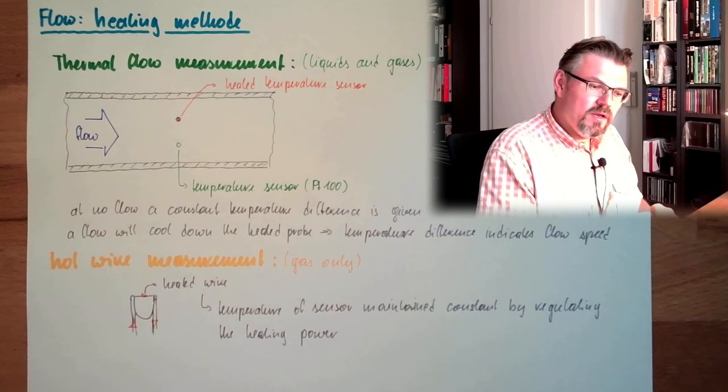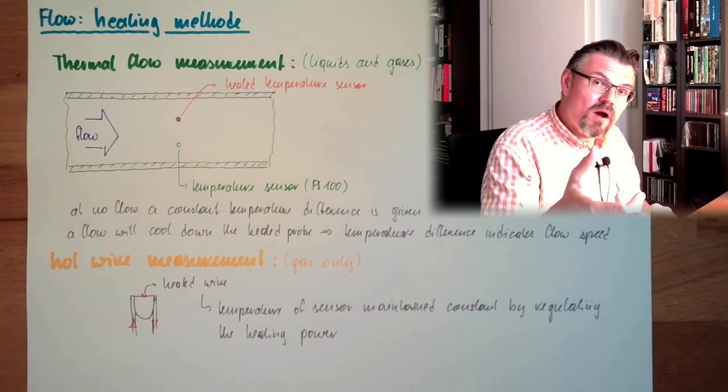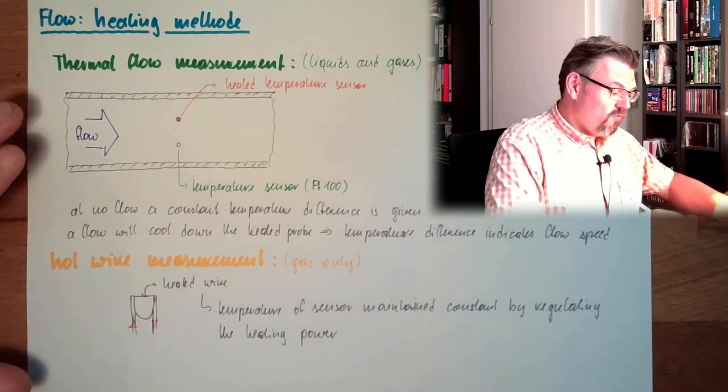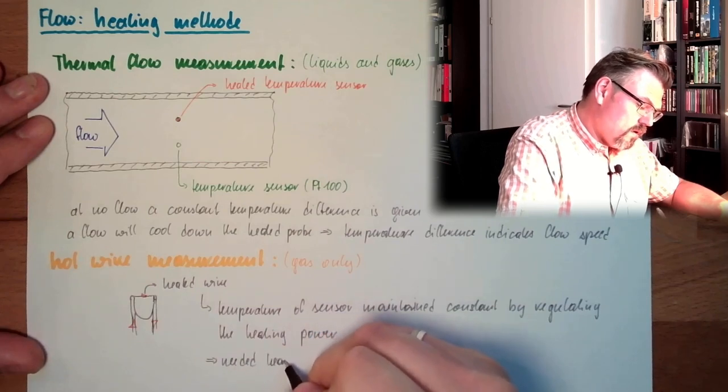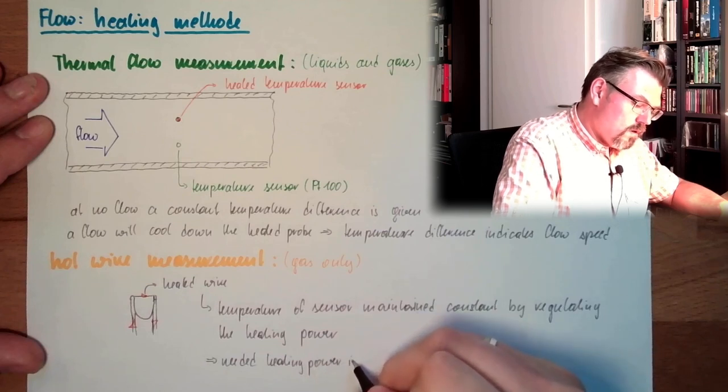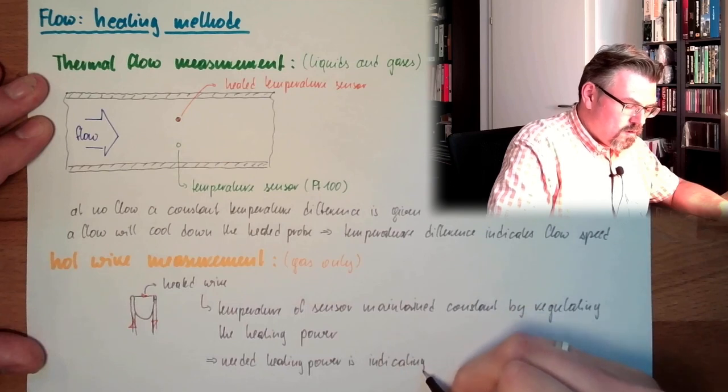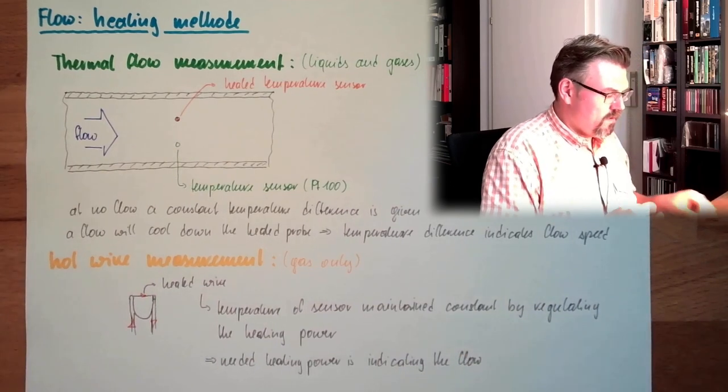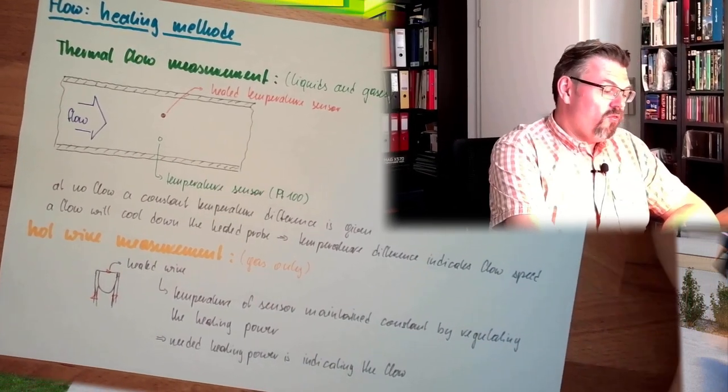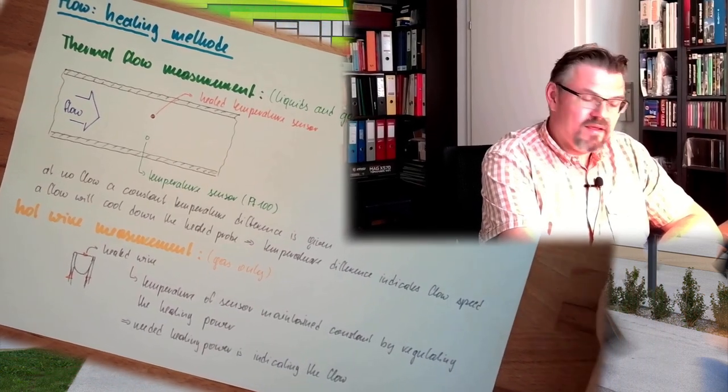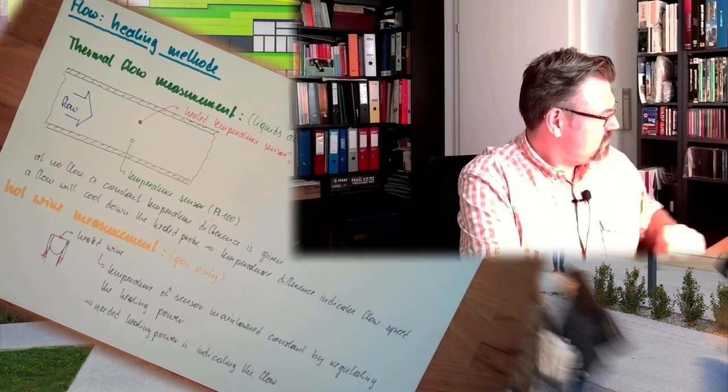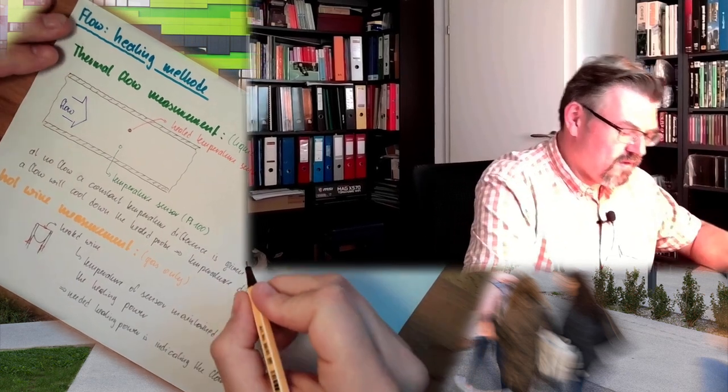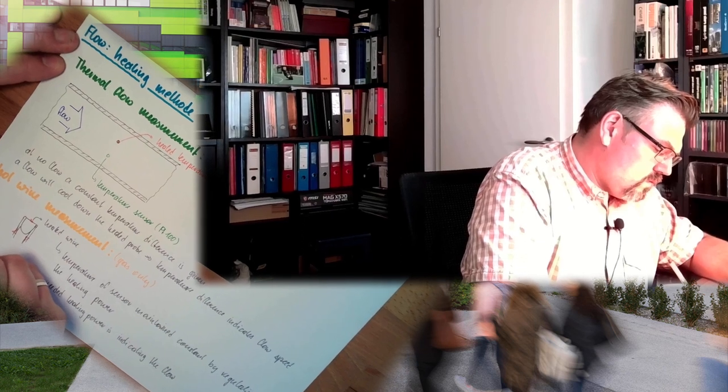Actually what we do is we look at the needed heating power, and the needed heating power is reflecting the flow. So the needed heating power is indicating the flow. These are thermal flow measurement, hot wire flow measurement, heating methods I call it, these two things. The accuracy is around 1 to 1.5 percent of the value. These things here are already measuring not only the flow, they are also measuring the mass.